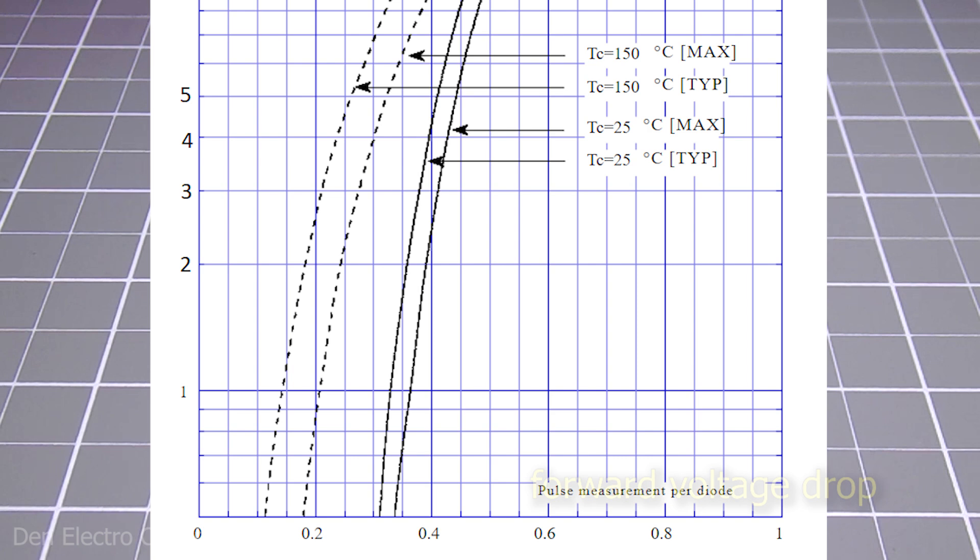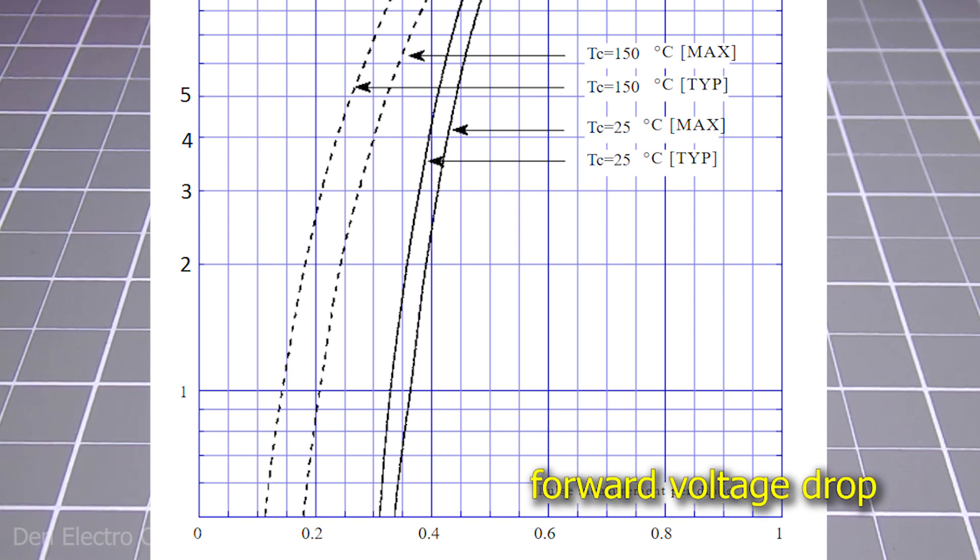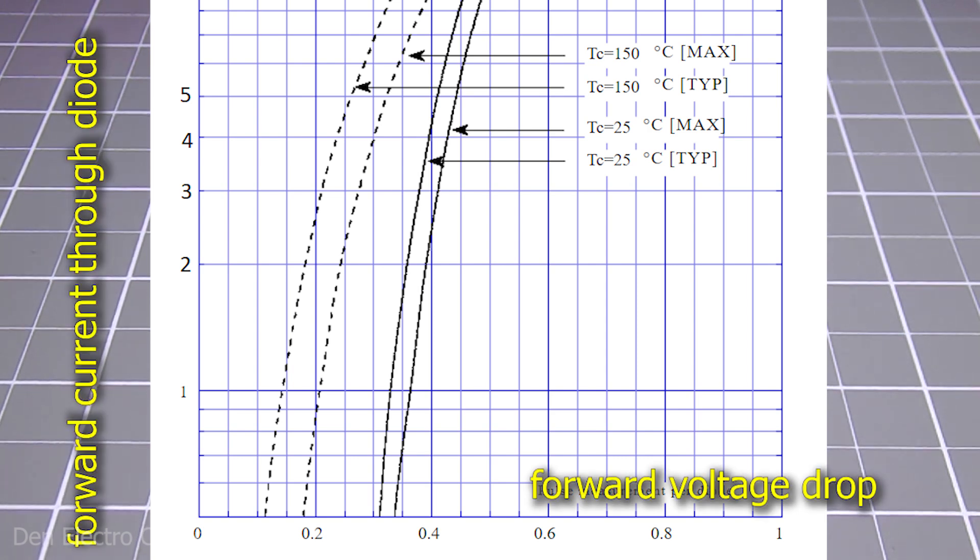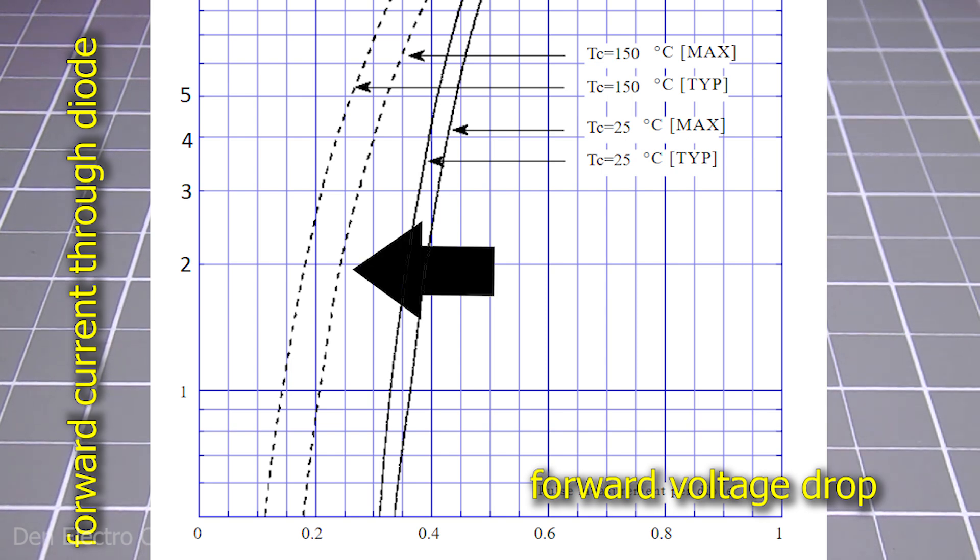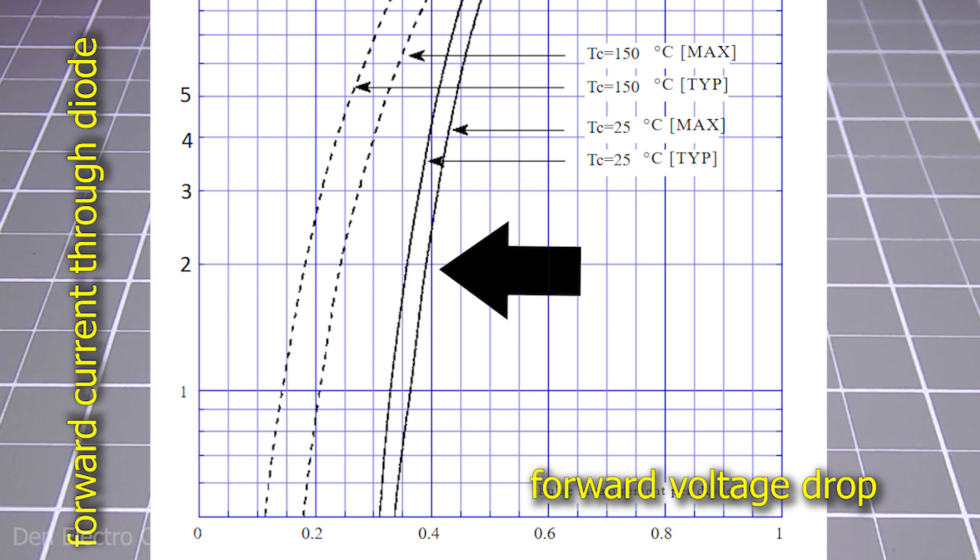The horizontal axis shows the voltage drop, and the vertical axis shows the current passing through the diode. The two dotted lines show the voltage drop at a temperature of 150 degrees, and the two solid lines show the voltage drop at a temperature of 25 degrees.